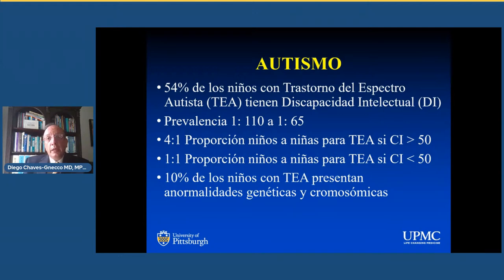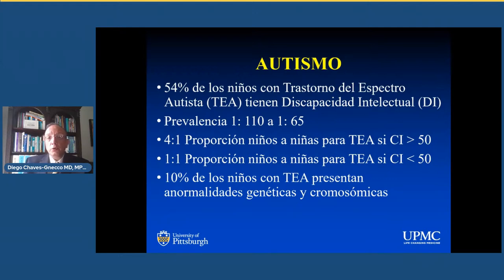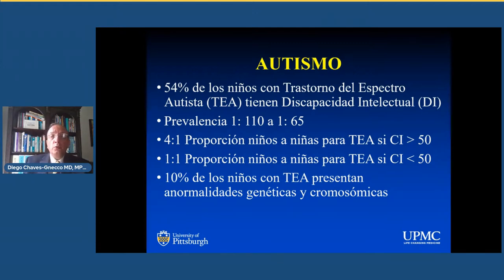Parte del problema de la baja prevalencia de autismo en latinos en Estados Unidos puede tener que ver con estas condiciones mencionadas. Otros autores mencionan factores genéticos, y también hay un grupo que menciona factores protectores relacionados con la forma en que los niños son criados. La población latina es conocida porque los niños crecen en hogares extendidos donde están los abuelos y los tíos, lo cual no ocurre en la población general de Estados Unidos donde los niños crecen en hogares nucleares. Independientemente de cuál sea la razón, es un hecho que los latinos en Estados Unidos tienen un diagnóstico de autismo mucho más bajo, y evidentemente también puede haber una base genética.